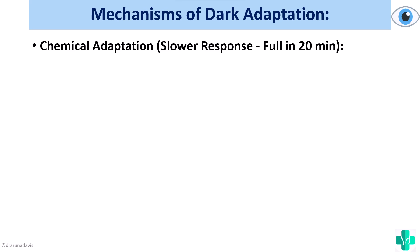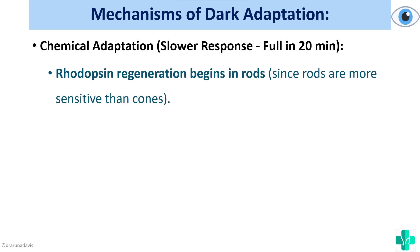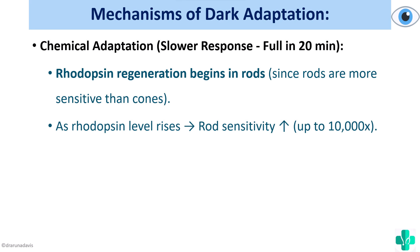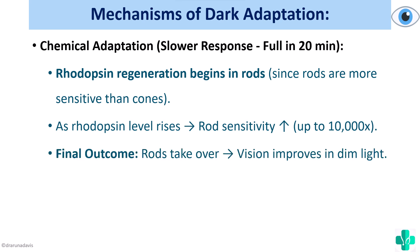Chemical adaptation is slower and takes up to 20 minutes. During this time, rhodopsin regeneration begins in the rods. Since rods are more sensitive than cones, as the rhodopsin level rises, rod sensitivity increases and the rods gradually take over, improving vision in dim light. Rods are better suited for scotopic vision. As rhodopsin levels increase and retinal sensitivity rises, rod sensitivity increases and the eye sees better in dim light. Chemical adaptation is very important for dark adaptation — the hero here is the rods.